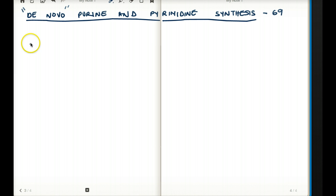So first of all, what are the purines? Purines are adenine and guanine. And pyrimidines are thymine and cytosine. Both purine and pyrimidines can be made from a substance called PRPP. PRPP stands for phosphoribosyl pyrophosphate.